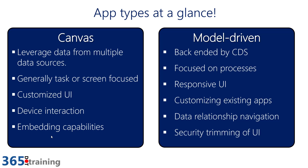Whereas with model-driven apps, they always have to be back-ended by the Common Data Service and are usually focused on a specific process or situation. Unlike Canvas apps, model-driven apps typically have a more responsive UI, allowing you to expand and collapse things and navigate data relationships. Model-driven apps can typically be spun up much quicker than Canvas apps because there's less development and architecture time — it's more of a configuration-based framework.